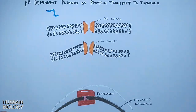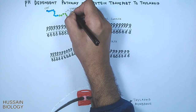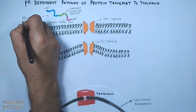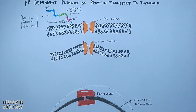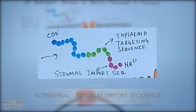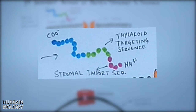The protein to be transported to the thylakoid lumen is the precursor of metal binding protein. This precursor protein has an N-terminal stromal import sequence, and in the middle of the protein we have the thylakoid targeting sequence.